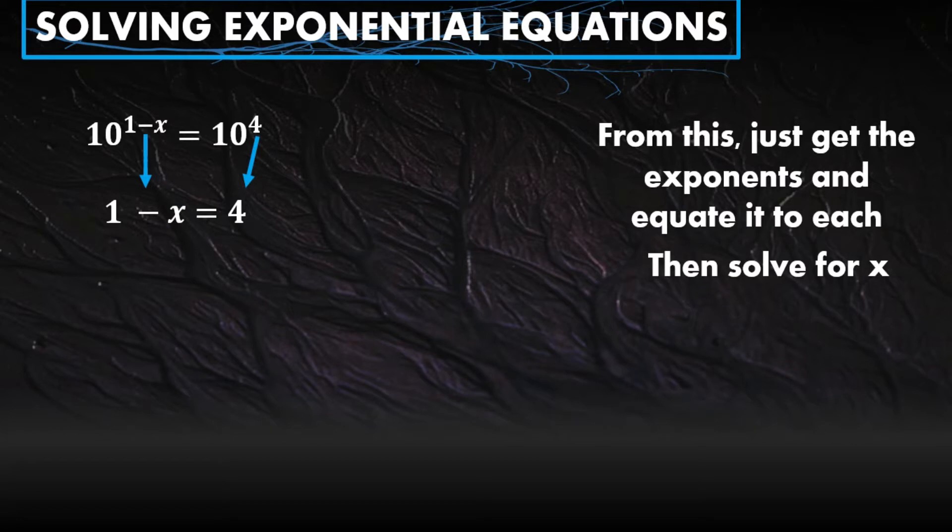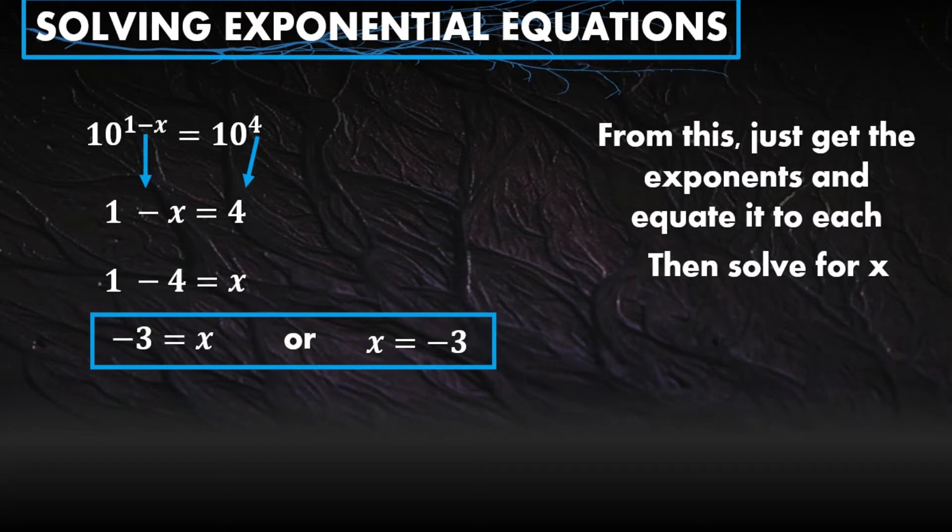After that, you can solve for x. Basically, what you need to do is isolate x. When we say isolate, it should be alone on one side of the equation, regardless of the side. To make it easier, transpose the negative x to the right side so it becomes positive. Then transpose the 4 as well. This becomes 1 minus 4 equals x. Don't get confused—the 4 from the right side is positive, so when transposed it becomes negative. The negative x from the left becomes positive when transposed. Simplify and we get negative 3 equals x, or x equals negative 3. That's our answer.